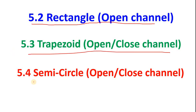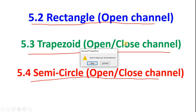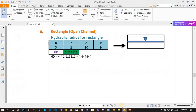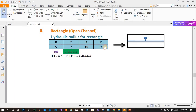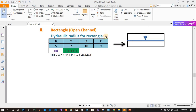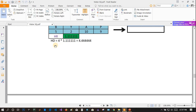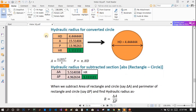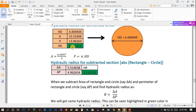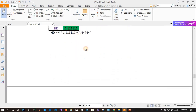Now let's quickly see the rectangular open channel example. The only difference from the closed channel is in the perimeter: for an open channel, you use P = 2y + b, not adding the top width again. Find hydraulic radius the same way, then hydraulic diameter as four times that value. Draw a circle of that hydraulic diameter, find its area and perimeter, and again compute hydraulic radius — you will get the same value: 1.11.